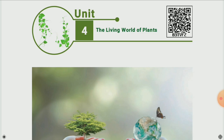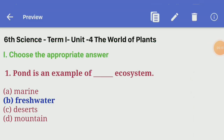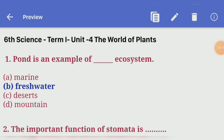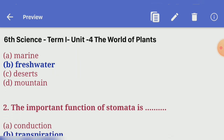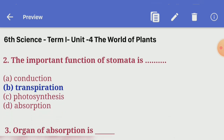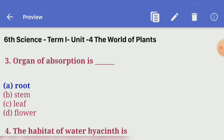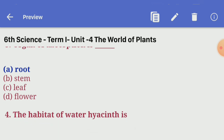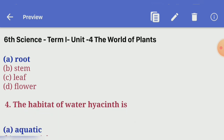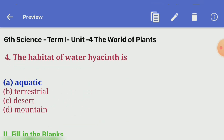Bookback answers. First section: choose the appropriate answer. First one, pond is an example of which ecosystem? Answer B: fresh water. Second one, the important function of stomata is? Answer B: transpiration. Third one, organ of absorption is? Answer A: root. Fourth one, the habitat of water hyacinth is? Answer A: aquatic.